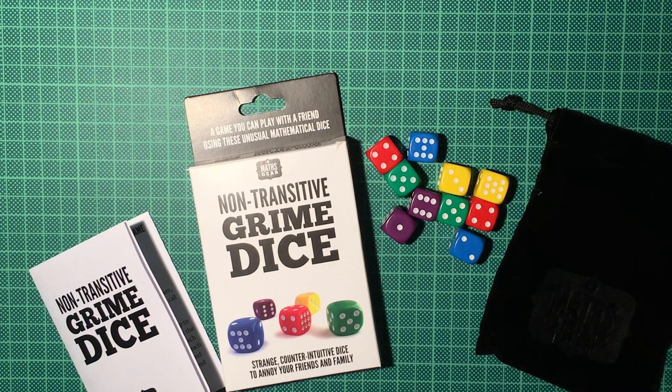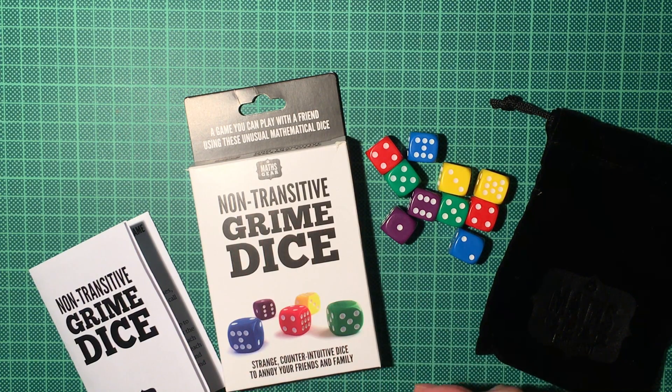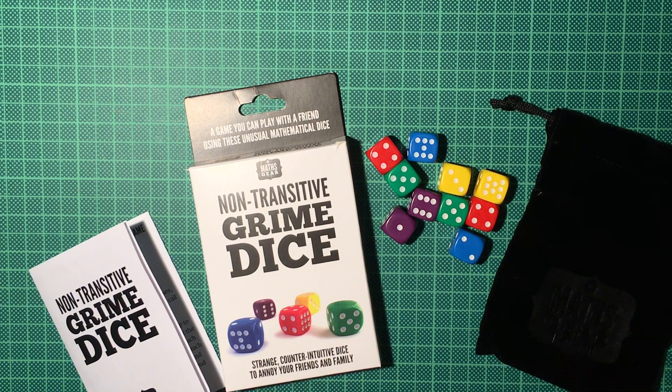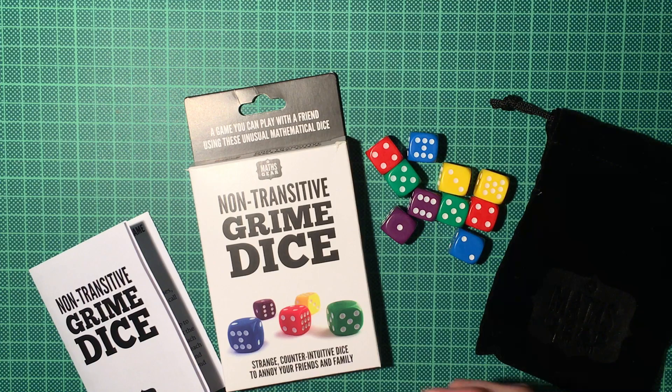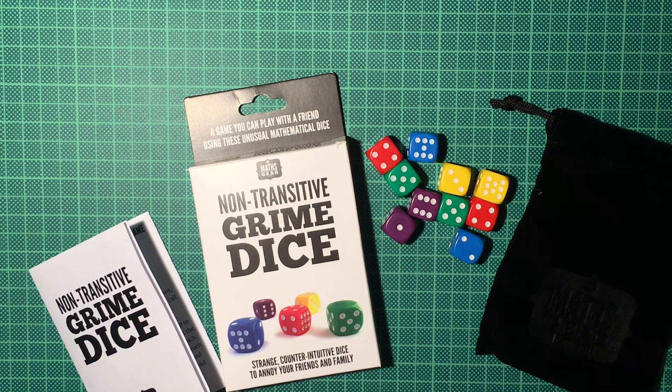Hello and welcome back to our third part of the Weird Dice series. Today I have the non-transitive Grime Dice. They were discovered by James Grime, a mathematician that you might know if you're watching the Numberphile videos. He also has his own YouTube channel and a very nice website. I will link to all of that in the video description.